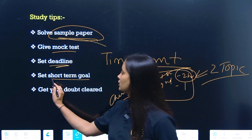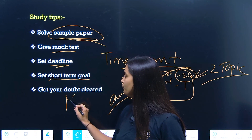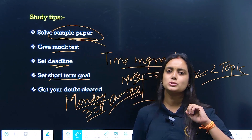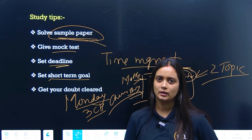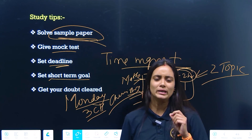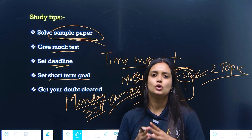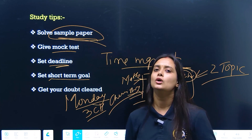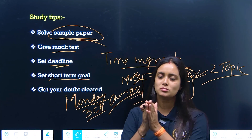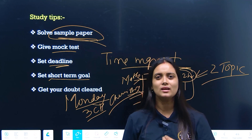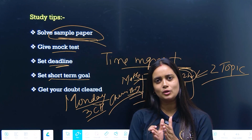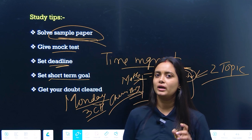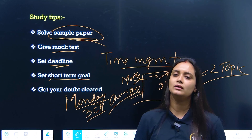Set short-term goals: decide each day how much you will study — for example, complete three chapters or two small chapters. If you make small goals, they are easily achieved. Long-term goals feel overwhelming because the syllabus is vast with many chapters and subjects. But if we break it into chunks and tackle it in small pieces, we can cover it easily and complete the syllabus in less time.